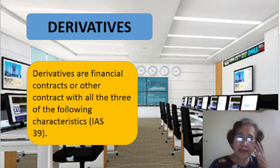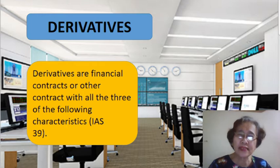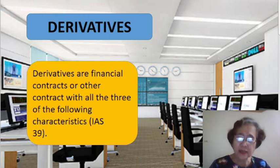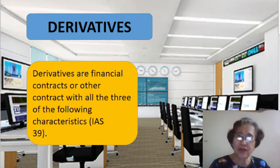First objective: we have to define derivatives. They are financial contracts or other contracts with all three of the following characteristics. But before we go to the characteristics of derivatives, let's state the purposes why derivatives are issued. Number one purpose is to speculate — in the process, you may incur risk. Number two purpose is to hedge, in other words, to avoid or manage risk. Either of these is the objective that you want to focus on.